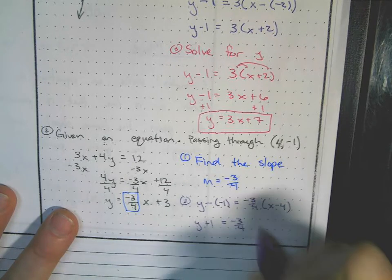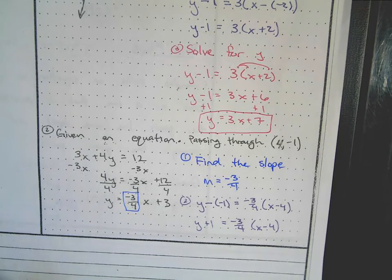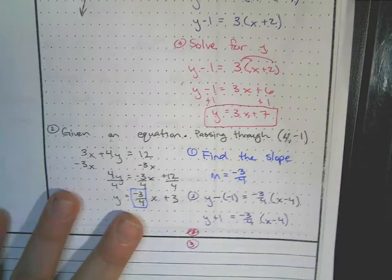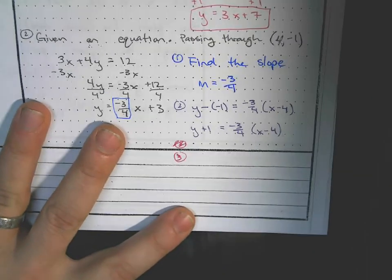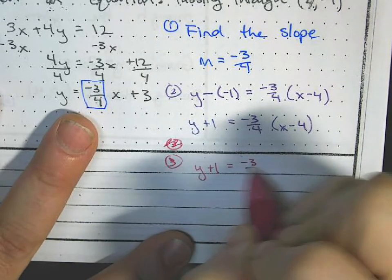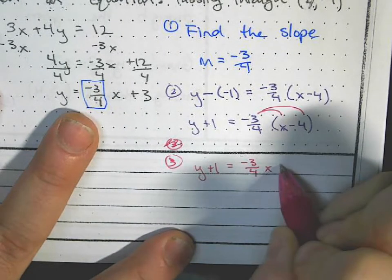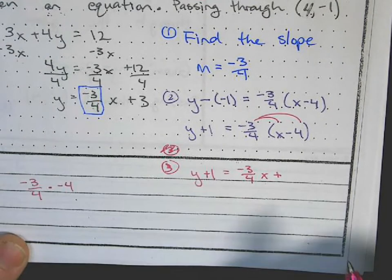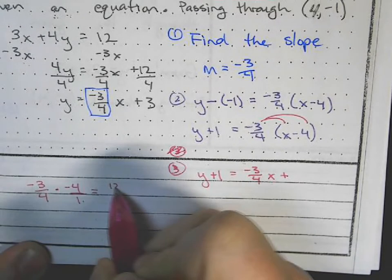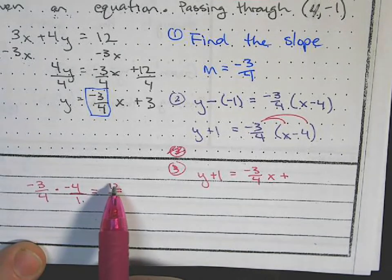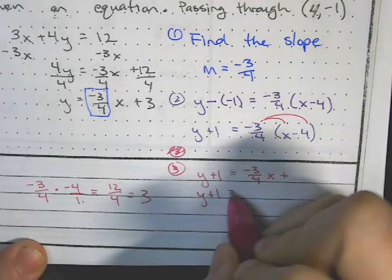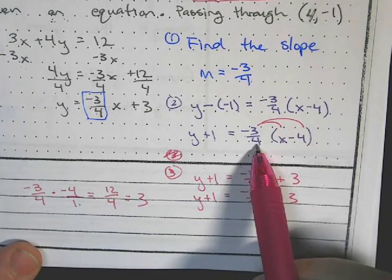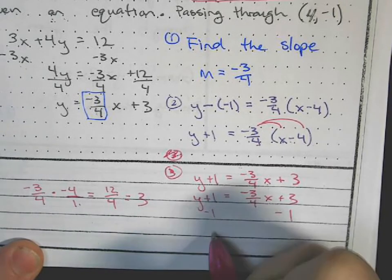Now let's clean up and solve for y. Distributing: y plus 1 equals negative 3 fourths x plus... negative 3 fourths times negative 4 — put the negative 4 over 1 — gives positive 12 over 4, which is positive 3. So y plus 1 equals negative 3 fourths x plus 3. Then subtract 1 from both sides and we're done.